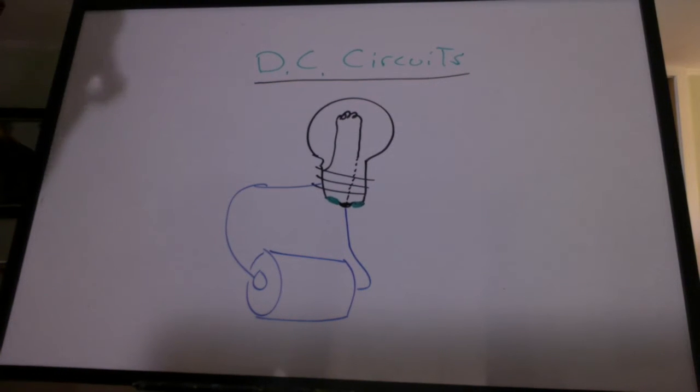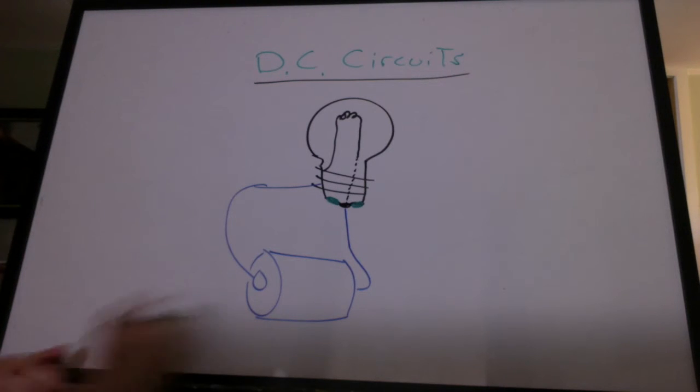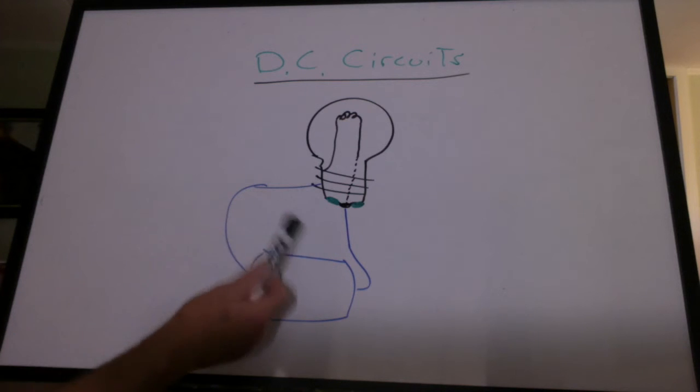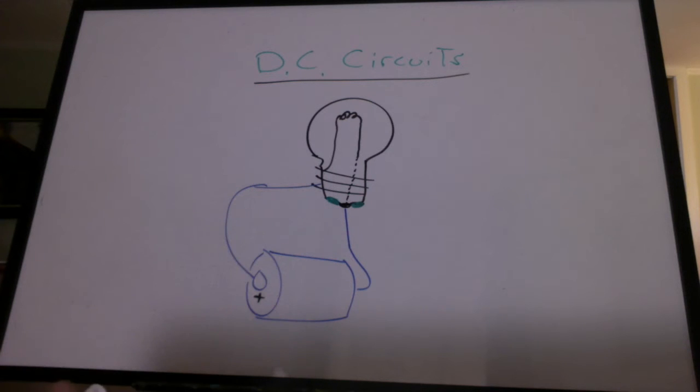Okay, everybody. So we've been talking about DC circuits. Maybe you saw some of the YouTube videos. We've got a battery here. That's the positive end of the battery, and historically, people always just assumed it was the positives that were moving. We'll talk about that in a second. So we just imagine positive charges are moving through the bulb.